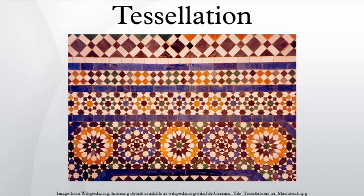Tessellation can be extended to three or more dimensions. Certain polyhedra can be stacked in a regular crystal pattern to fill three-dimensional space, including the cube, the rhombic dodecahedron, and the truncated octahedron. Some crystals including andradite and fluorite can take the form of rhombic dodecahedra. The Schmitt-Conway biprism is a convex polyhedron which has the property of tiling space only aperiodically; John Horton Conway discovered it in 1993.